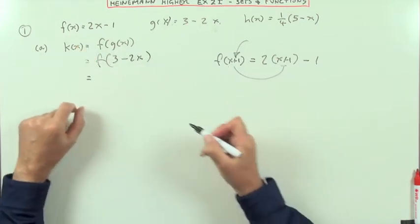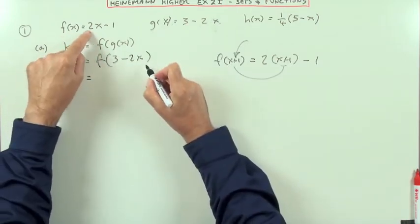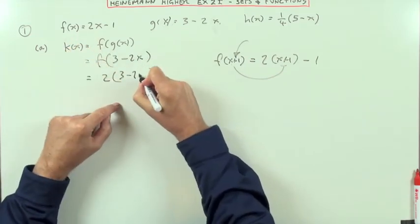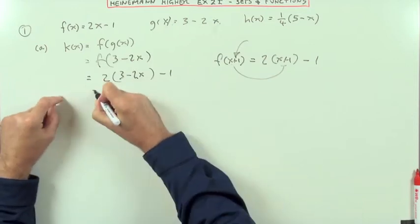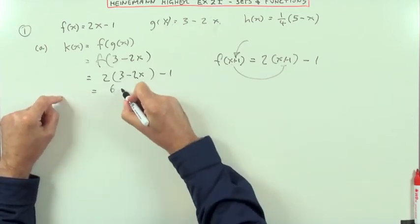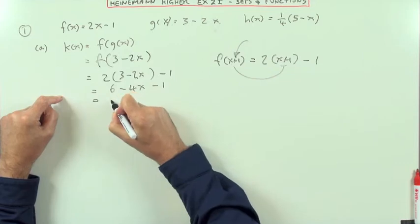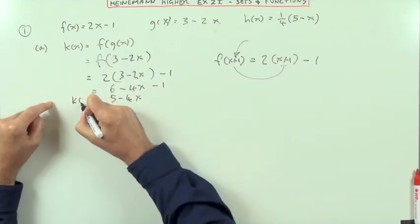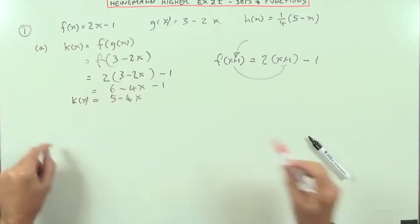So if it acts on this, what f will do is it will do two times whatever you feed it, and I'm feeding it three minus two x, and then take away one. So multiply that out. Six minus four x minus one. So that's five minus four x. I better put this down here, keep it neat. So that'll be the first one.